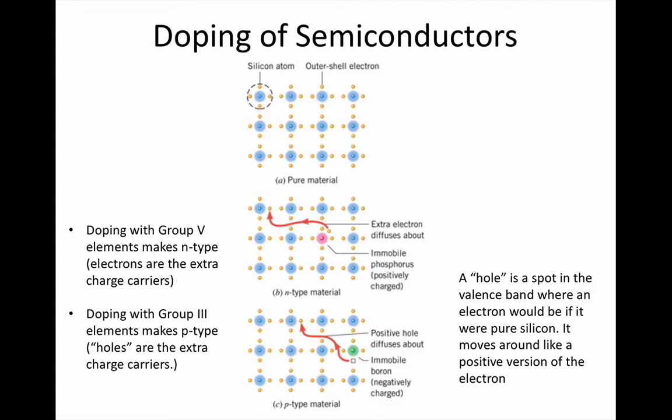Semiconductors on their own would be of little interest. But in the early 20th century, scientists were looking at alternatives to the vacuum tube valves that early computers were made of. These valves had two functions — they could act as a switch and as an amplifier, and with just those two things you could make a computer. In semiconductors, researchers found ways of controlling how much current they allowed through, so that they acted as a switch for current.